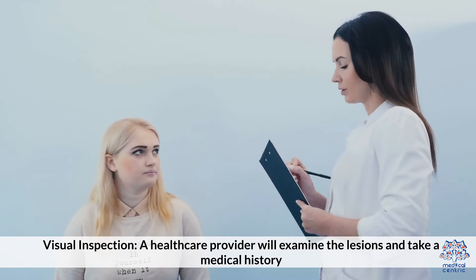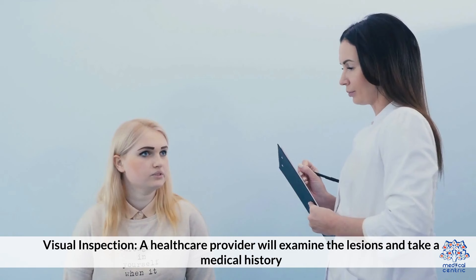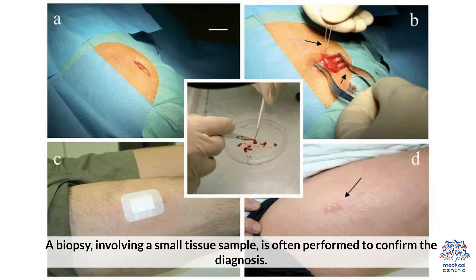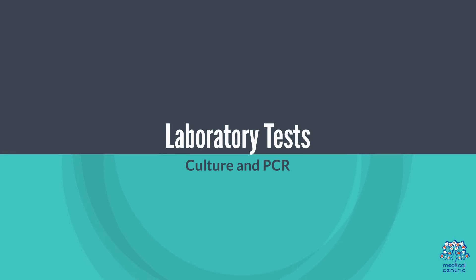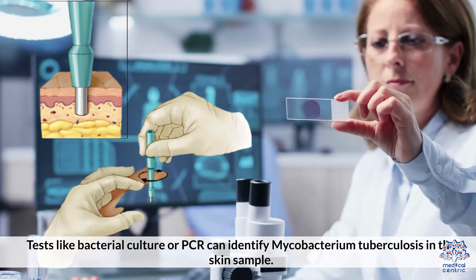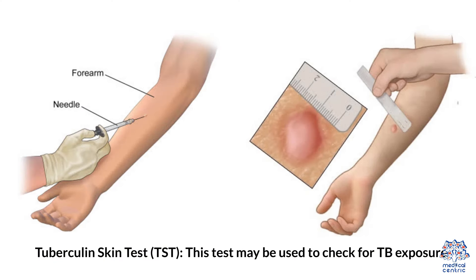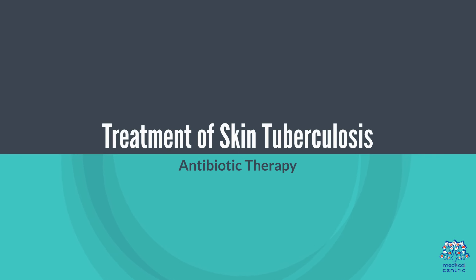Diagnosis of Skin Tuberculosis. Clinical examination: a healthcare provider will examine the lesions and take a medical history. Skin biopsy: a biopsy involving a small tissue sample is often performed to confirm the diagnosis. Laboratory tests such as bacterial culture or PCR can identify Mycobacterium tuberculosis in the skin sample. The Tuberculin Skin Test (TST) may also be used to check for TB exposure.